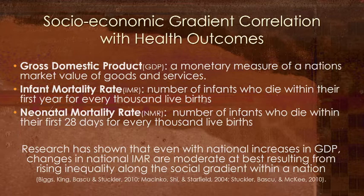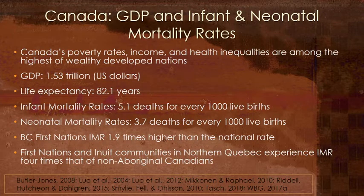Research has shown that even with larger increases of GDP, changes in IMR are moderate at best, and this is due to rising inequality along that social gradient. Moving briefly to Canada: contrasting a position of global health and development, Canada's poverty, income, and health inequalities are among the highest of developed wealthy nations — a baffling statement considering Canada's inclusive and federally funded healthcare system. Infant and neonatal mortality statistics of Canada's 5.6% Aboriginal population are inconsistent and in many cases non-existent. In some First Nations communities in British Columbia and Manitoba respectively, IMR was found to be 2.3 and 1.9 times higher than the national IMR. In rural First Nations and Inuit communities of Northern Quebec, the IMR was found to be four times that of the national rate.